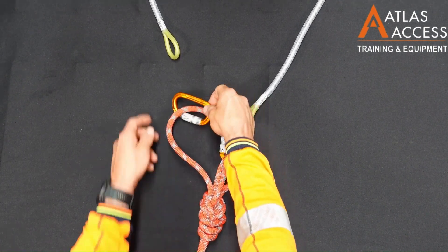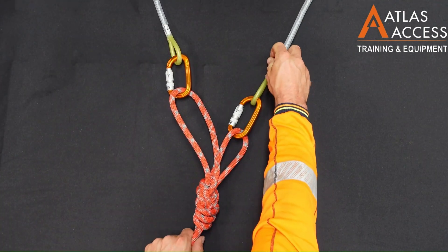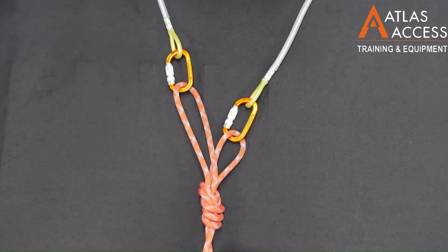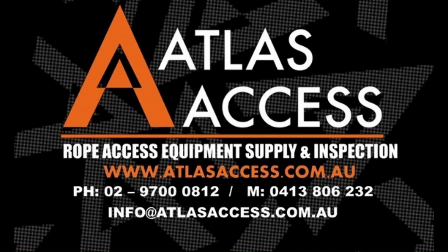Then, readjust to the loop we want to be longer. This way, we can equalize the rope and keep a balanced weight on each anchor. Pretty cool.